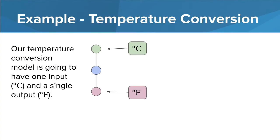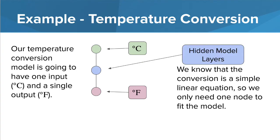So let's take a look back at our temperature conversion problem. A model for this might look something like this. There's one input to our model, degrees Celsius, so you only have one input node. Likewise, there's only one output, degrees Fahrenheit, so we have one output node. The number of nodes in the hidden model layer typically estimates the complexity of the data. In this case, since the data is linear, you only need one node.